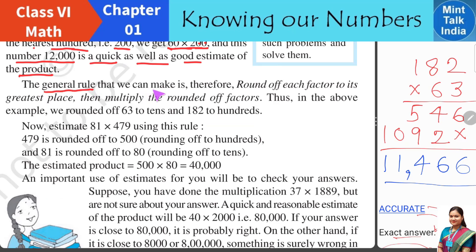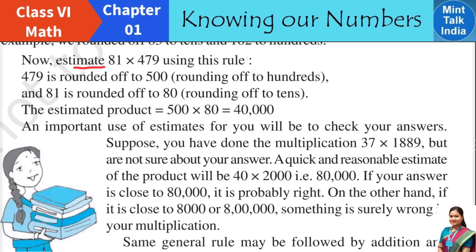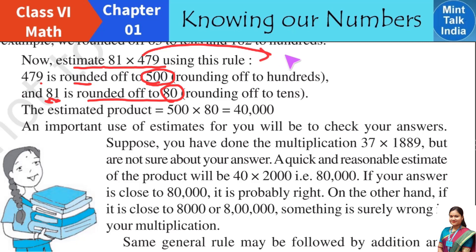The general rule is: we round off each factor to its greatest place and then multiply the rounded-off factors. Let us estimate 81 multiplied by 479. 81 is a 2-digit number, so round to the nearest tens — giving 80. 479 is a 3-digit number, so round to the nearest hundreds. Since 479 is nearer to 500 than to 400, we get 500. Now multiply 80 and 500: 8 times 5 is 40, and then three zeros, giving the estimated product of 40,000.